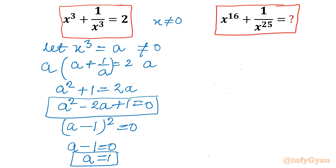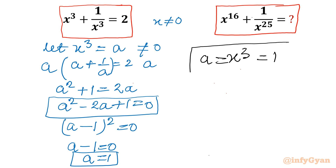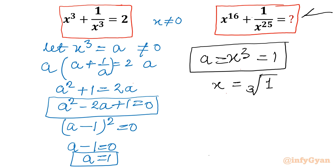So from here we can conclude a − 1 = 0, or a = 1. The conclusion is very important: a = 1. What is a? A is our x³. So a = x³ = 1. The ultimate point is x is a cube root of unity, and the cube roots of unity are 1, ω, and ω².